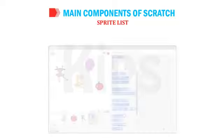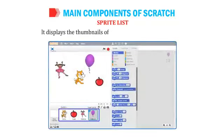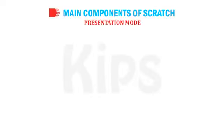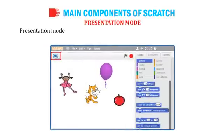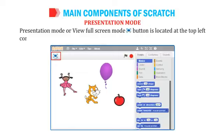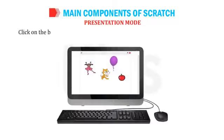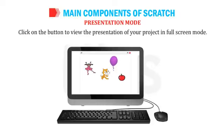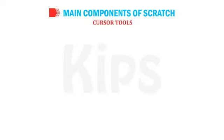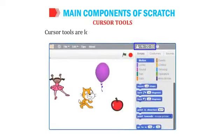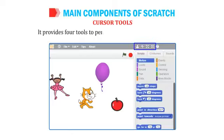The Sprite List displays thumbnails of all the sprites used in a project. The Presentation Mode, or View Full Screen Mode button, is located at the top left corner of the stage; click it to view your project in full screen. Cursor Tools are located at the top of the Scratch window and provide four tools to perform different operations on sprites.